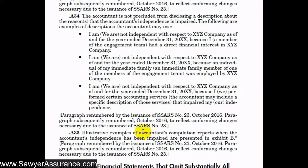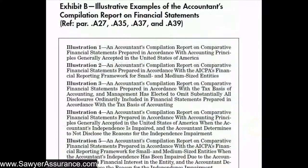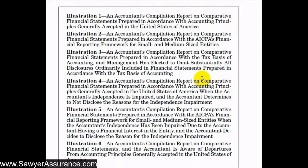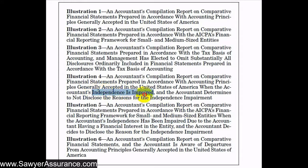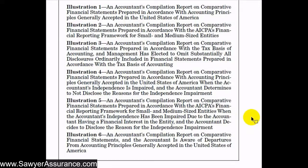It can certainly be a pretty simple disclosure as we see here. We also have some example compilation reports that include this particular paragraph, down at Exhibit B, so let's go down to Exhibit B and take a look at how they have included these paragraphs in the compilation report. Here in Exhibit B we have some illustrative example compilation reports on financial statements. What we're looking for are the ones where independence is impaired — illustration 4 and illustration 5.